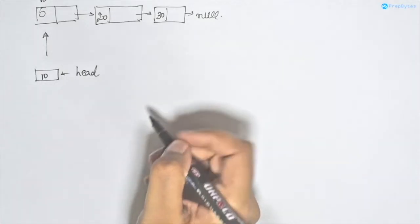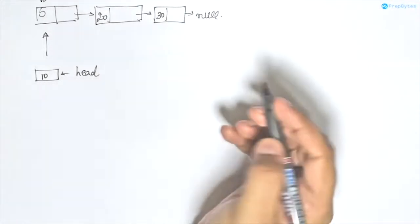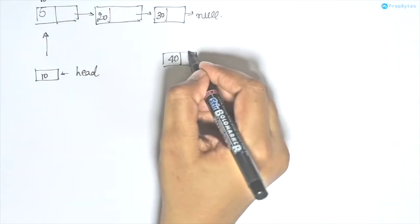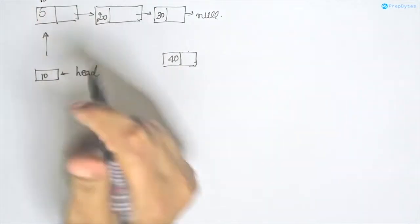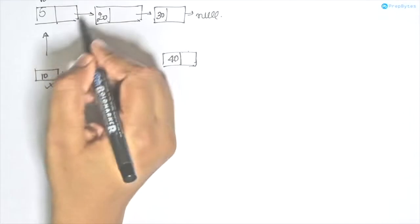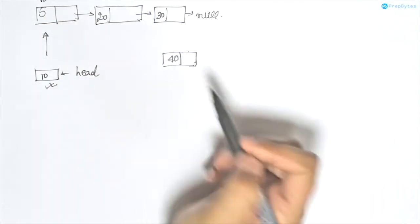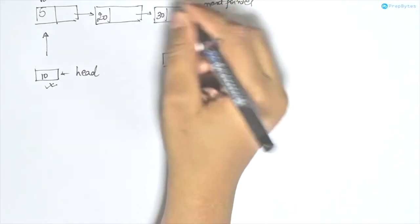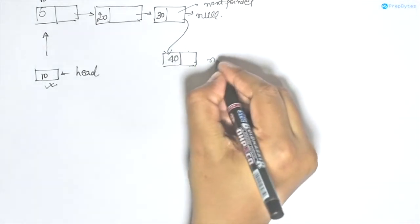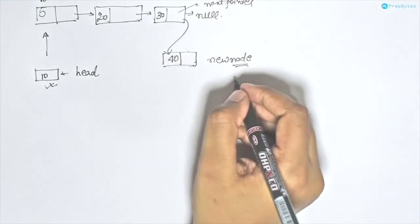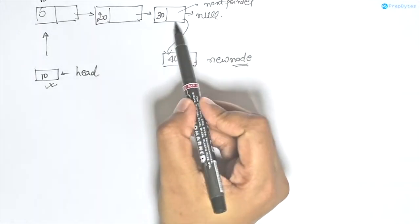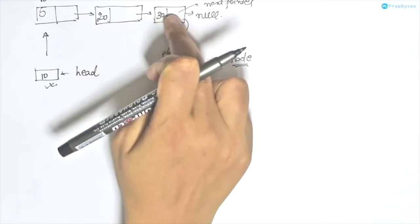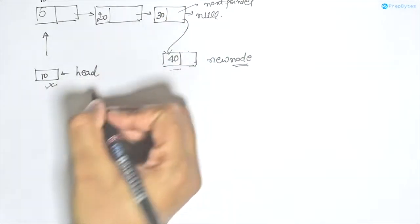Now let's say we have to insert a node at the end of the linked list. We have a new node with data 40 and want it inserted at the end. The head has address 10 pointing to the first node. To insert at the end, the next pointer of the last node should point to this new node. We'll need a temporary pointer temp to traverse to the last node.